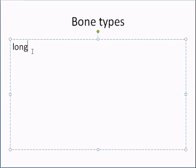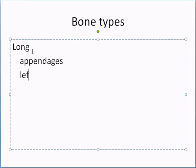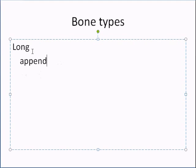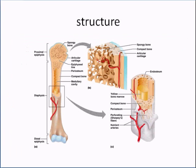Long bones are what you typically find in your extremities — your appendages. Basically we're talking about your legs, thigh, and arms. These are your long bones, and we just saw a picture of one.